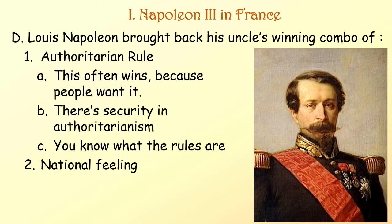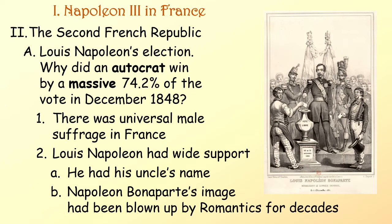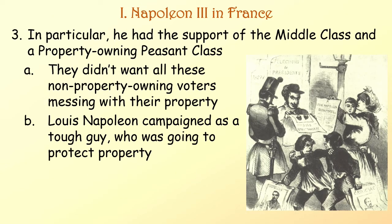Louis-Napoleon brought back his uncle's winning combination of authoritarian rule — which often wins because people want security and know what the rules are — and national feeling. Why did an autocrat win by a massive 74.2% of the vote in December 1848, when there was universal male suffrage in France? Louis-Napoleon had wide support. He had his uncle's name, and Napoleon Bonaparte's image had been blown up by romantics for decades. In particular, he had the support of the middle class and a property-owning peasant class who didn't want non-property-owning voters messing with their property. Louis-Napoleon campaigned as a tough guy who was going to protect property.